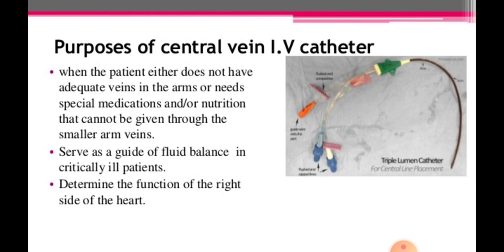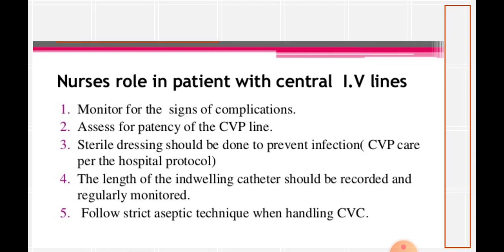The purpose of a central venous catheter is used when the patient either does not have adequate veins in the arms or needs special medications and nutrients that cannot be given through smaller arm veins. It also serves as a guide of fluid balance in critically ill patients to determine the function of the right side of the heart. The nurse's role includes monitoring for signs of complications, assessing the patency of the CVP line, performing sterile dressing to prevent infection, recording the length of the catheter, and following strict aseptic techniques when handling the CVC.